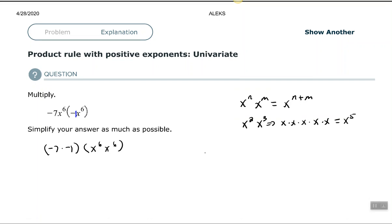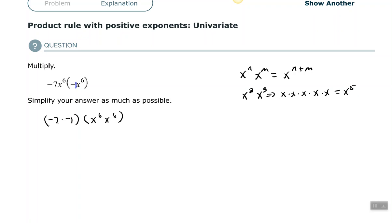Okay, so back to the problem now. Alright, so we have negative 7 times negative 1, which is positive 7. x to the 6th times x to the 6th, add the exponents. That gives us x to the 12th. Alright, so let's look at another problem.